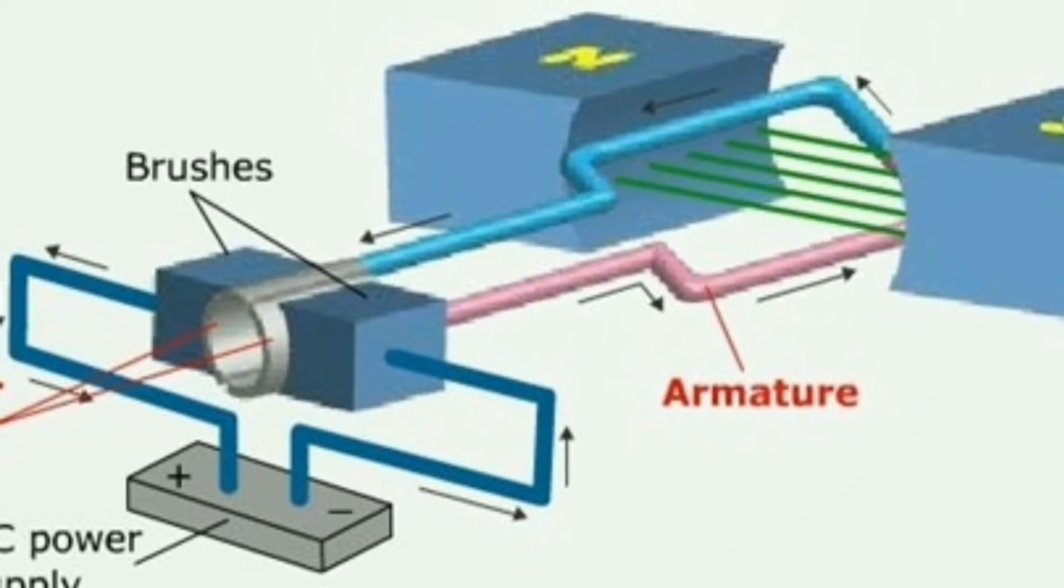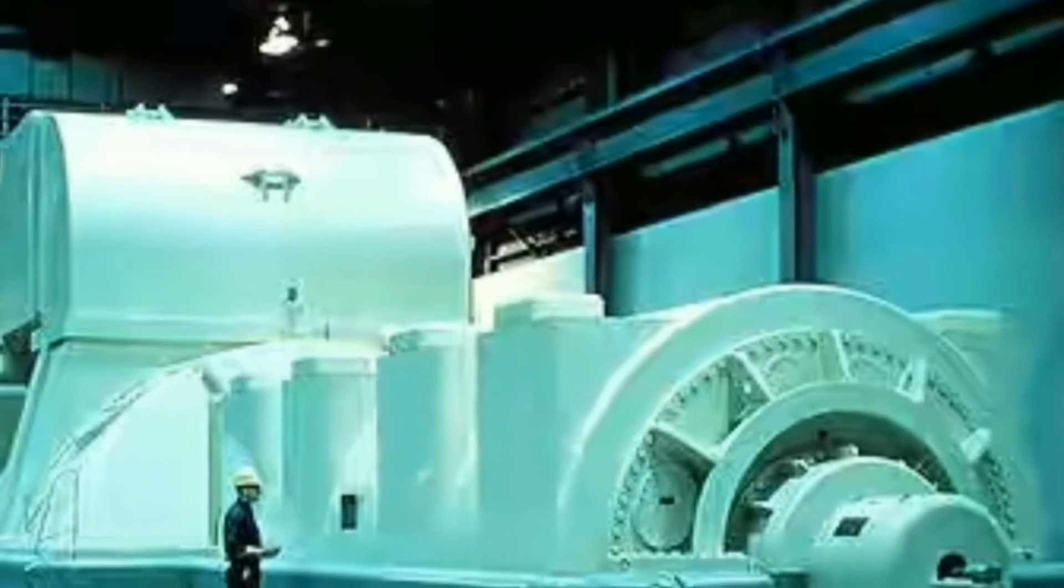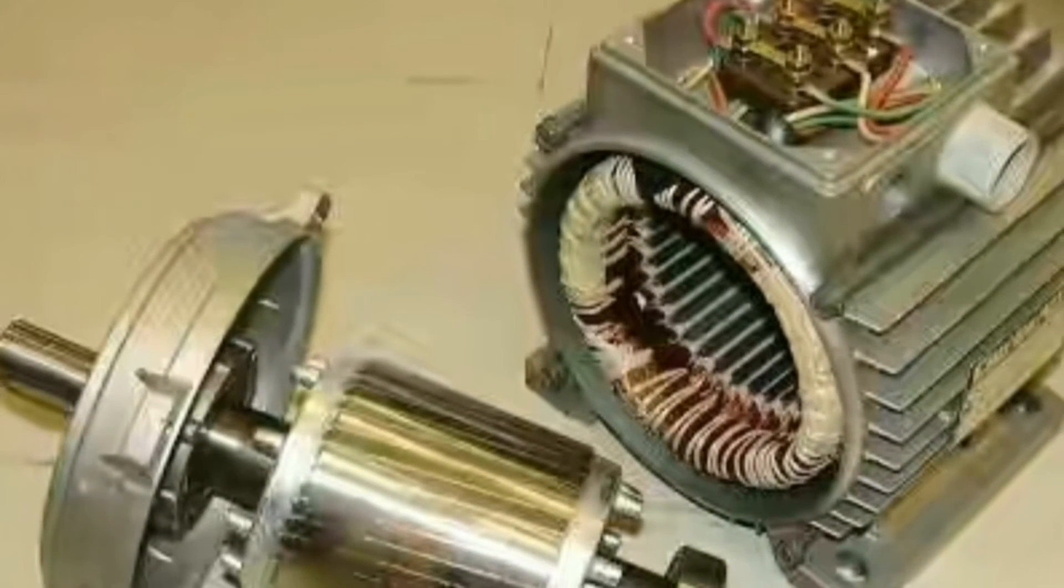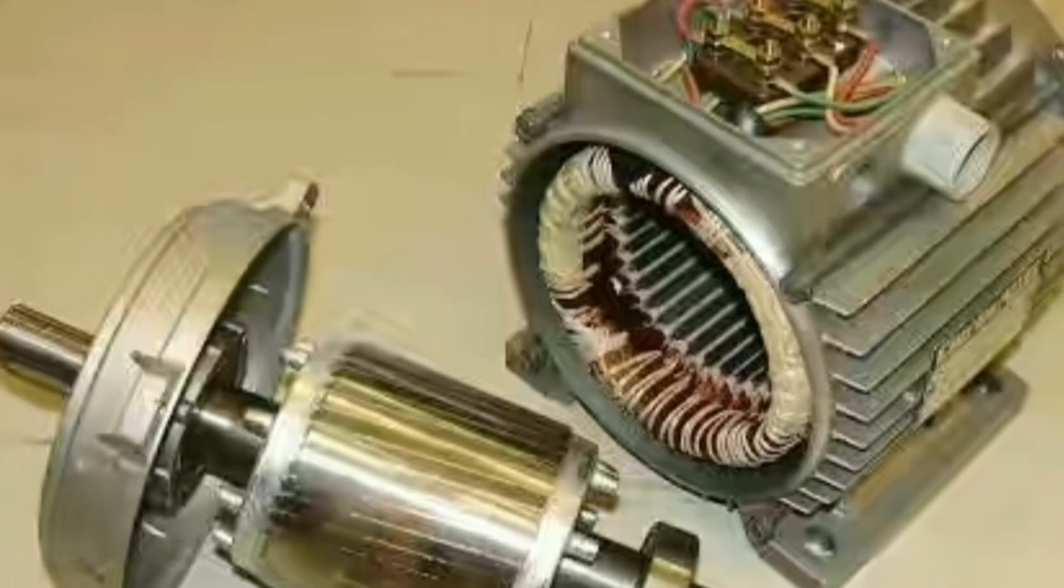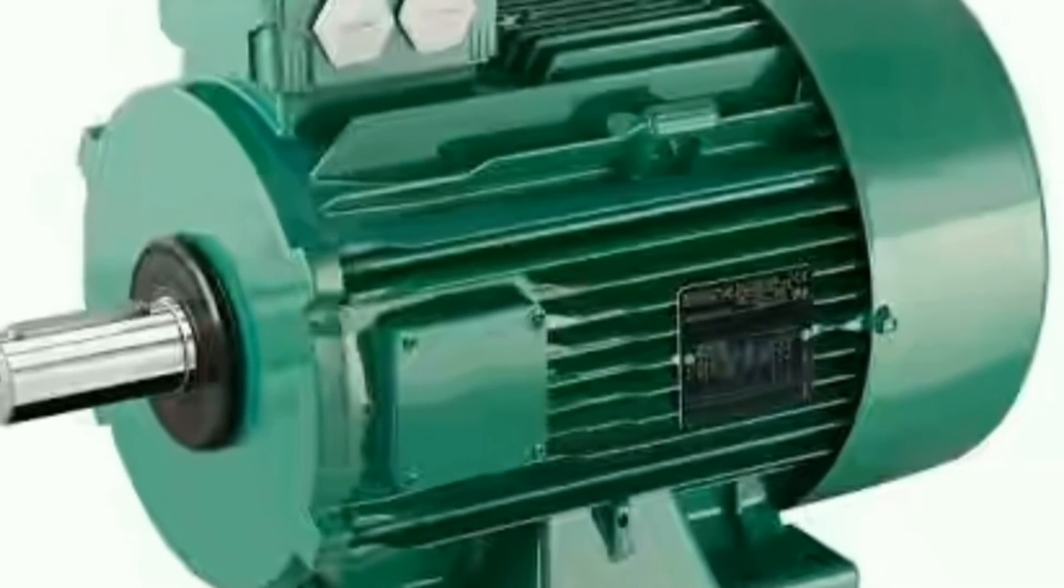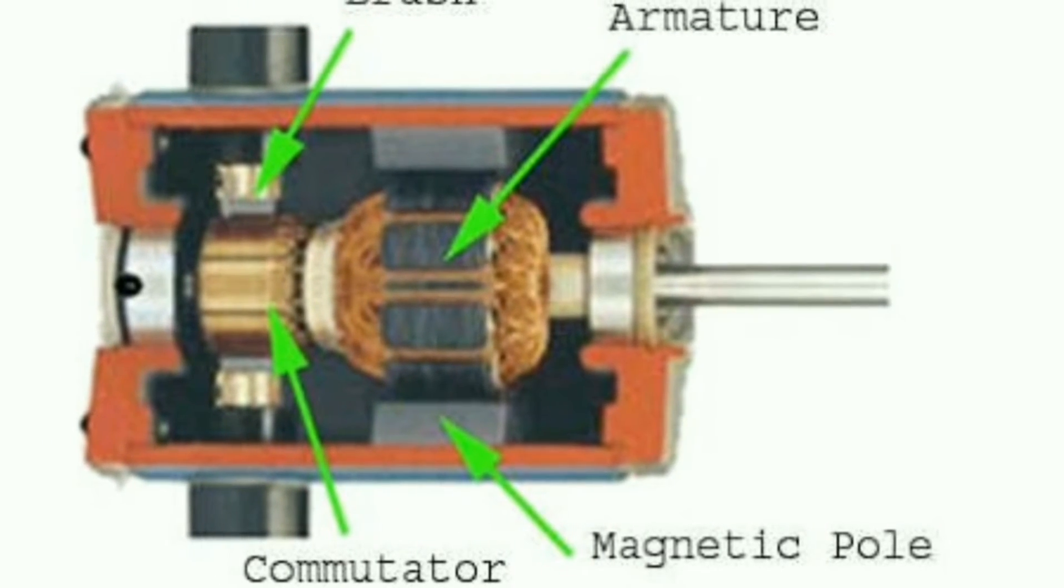And whenever we rotate the rotor mechanically, then the flux will be cut, and according to Faraday's law, an EMF will develop in the rotor conductor, and hence the current will flow through the load.